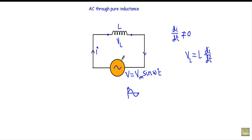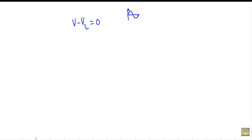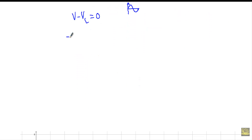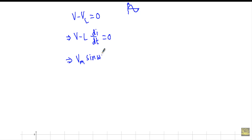This VL, the back EMF or the voltage developed across the inductor, will oppose the main supply voltage. Therefore, if I apply KVL in the clockwise direction in the circuit I will get: V minus VL equals zero. The voltage developed in an inductor is given by this formula: V minus L into dI/dt equals zero. Now we have V equal to Vm sine omega t.